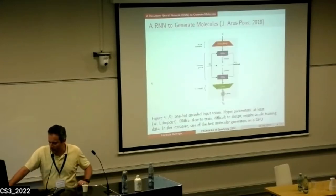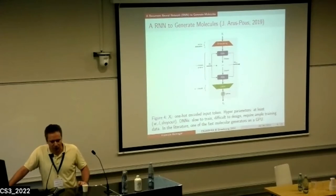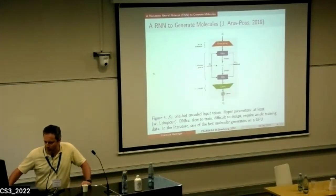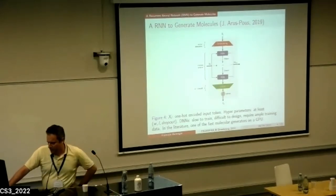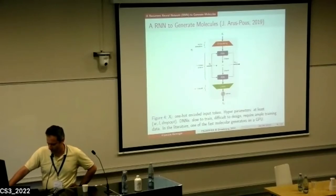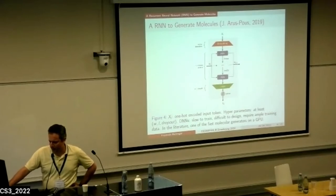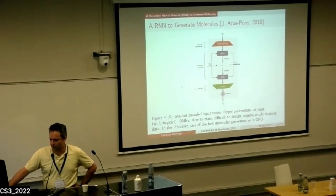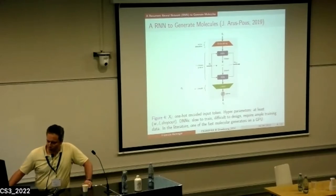This is the model I compare against, because it generates molecules pretty fast for a deep learning method — a recurrent neural network published by Arus-Pus in 2019. This architecture has several parameters: input layer dimension, output layer dimension, a dropout regularization parameter, and a number of hidden layers. To train such architectures, you need a lot of molecular data.